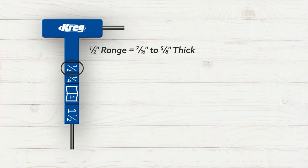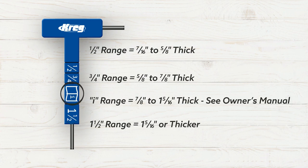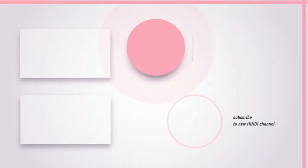You can do that by using the matching numbers on the material thickness gauge. There's the half inch range, three quarter inch range, the one and a half inch range that represents common material thicknesses.